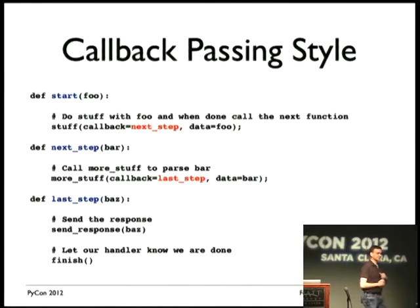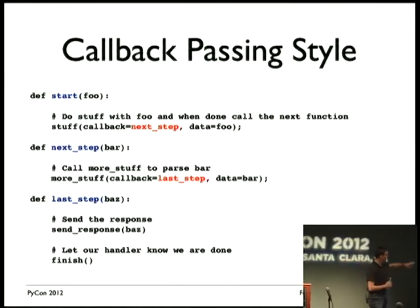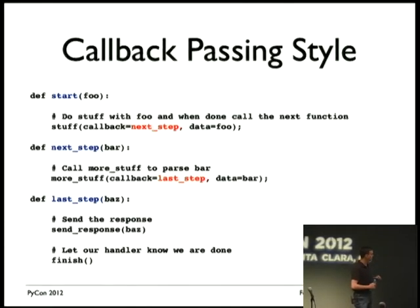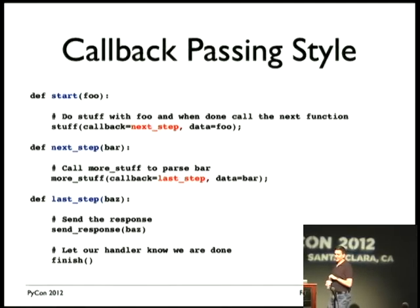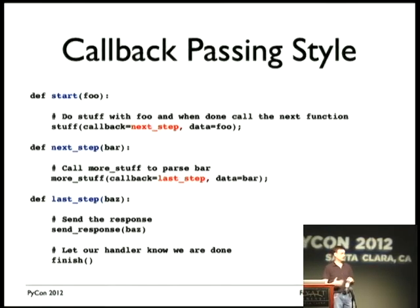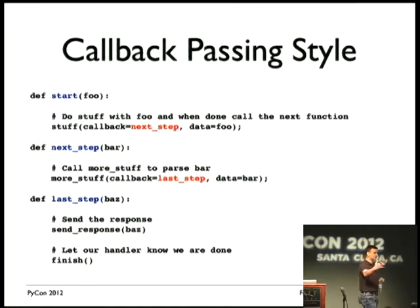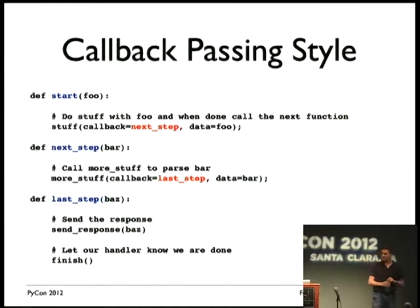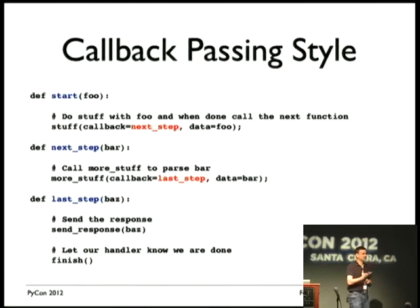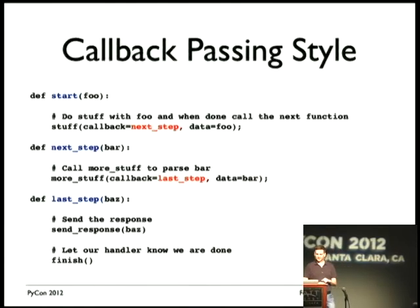In this simplistic example, we're starting and calling a method called 'stuff'. We let it know: when you're done, call the next step, and here's the data to work with. In the next step we call 'more stuff', and when it's done it calls the last step. This is the basic principle behind callback passing style programming and how most async apps are written.